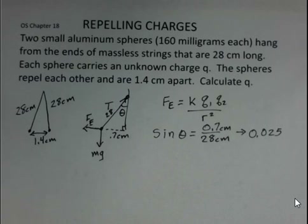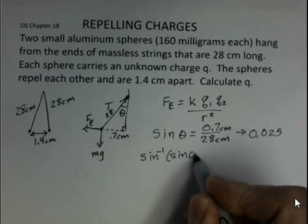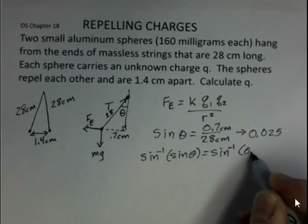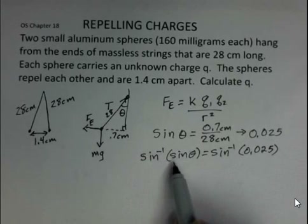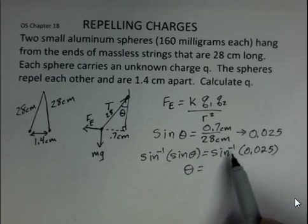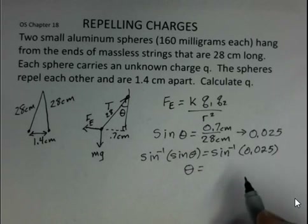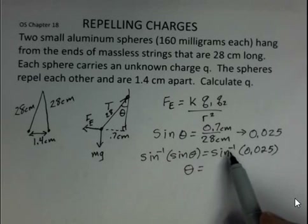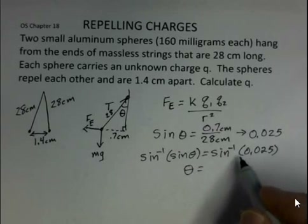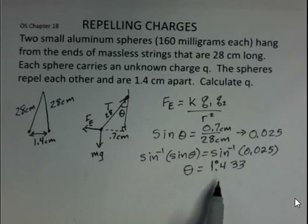To access theta — to get it out of the sine function — I apply the inverse sine to both sides: inverse sine of sine of theta equals inverse sine of 0.025. Inverse sine and sine are inverse functions of each other and they cancel, leaving us with theta. On your calculator, invoke the inverse sine function — using a second key and then the sine button. Note that sine to the minus 1 notation does not mean 1 over sine theta; it's the inverse sine function. I get 1.433 degrees. Make sure your calculator is in degree mode.